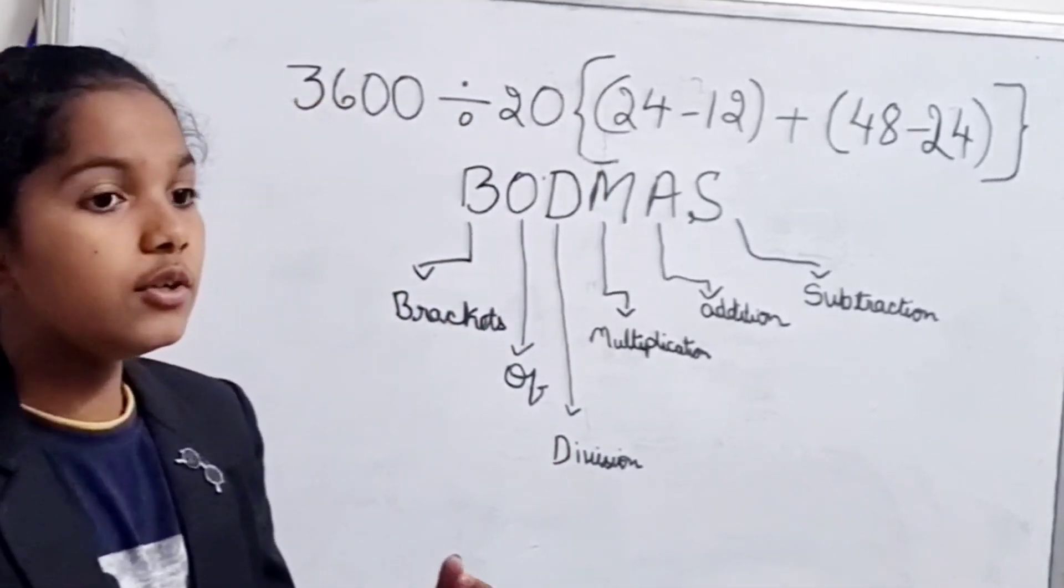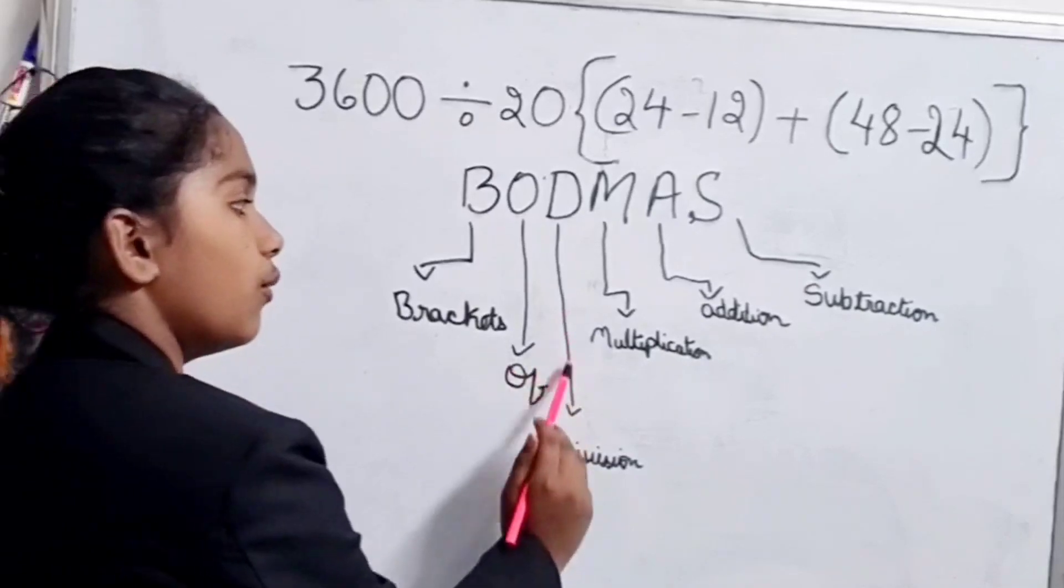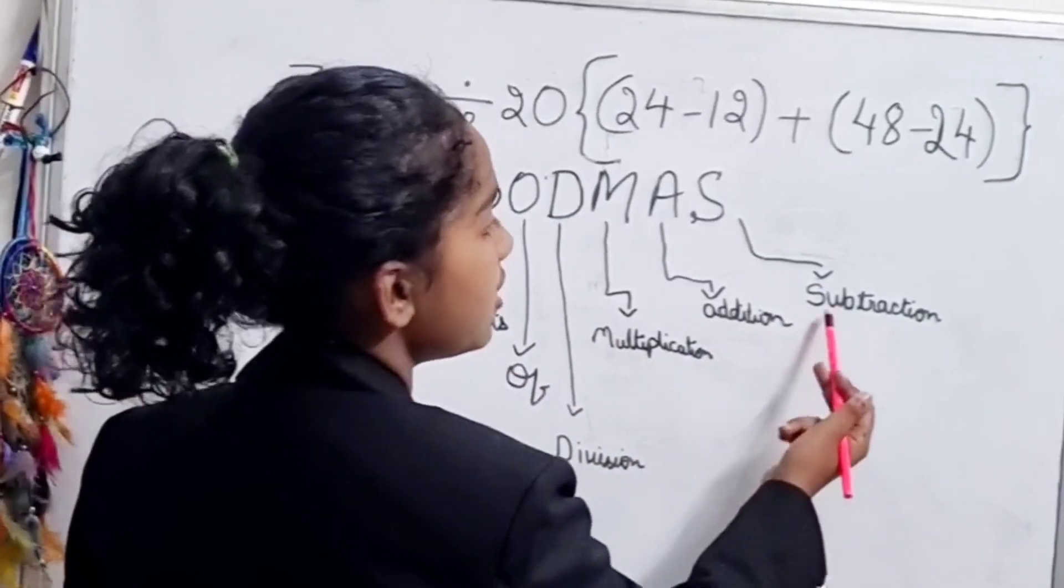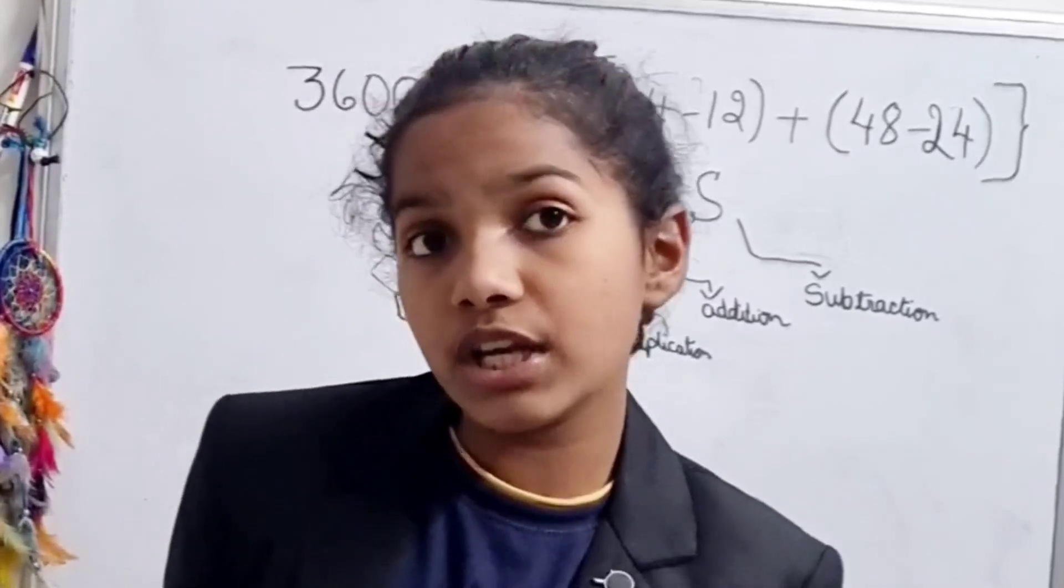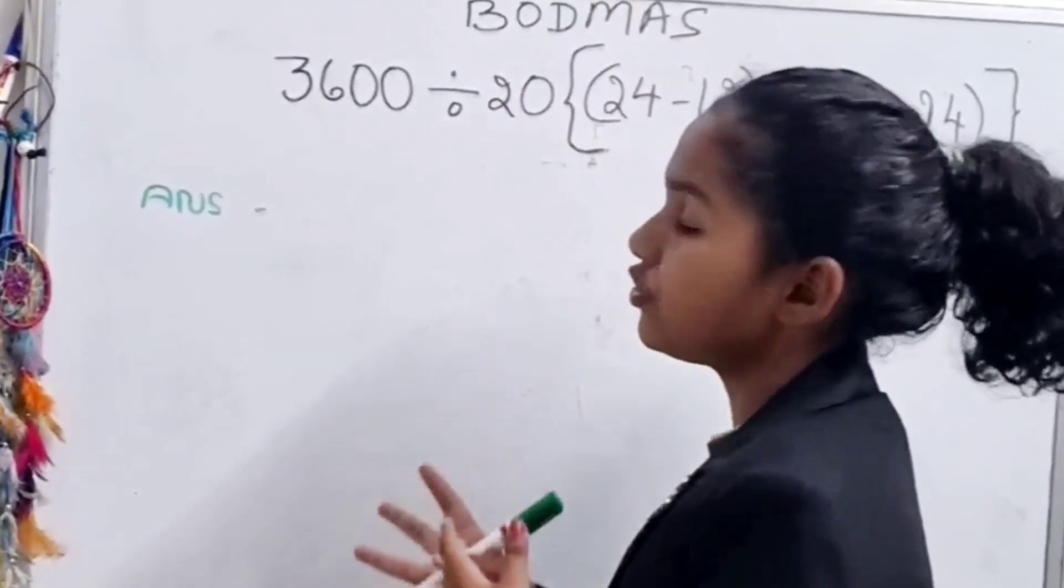So when we do division, afterwards we should go with multiplication, then addition, then subtraction. When we try this rule, we get much more accurate answers. Now let's try and solve this sum.